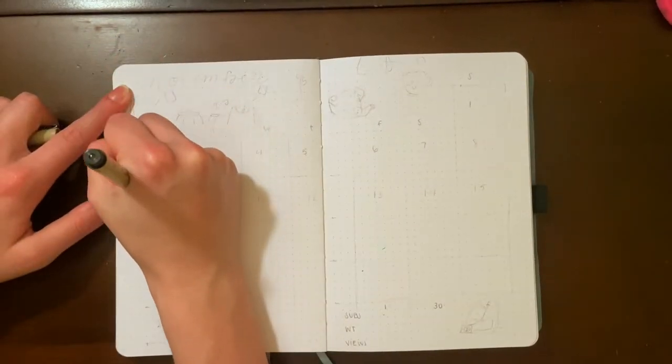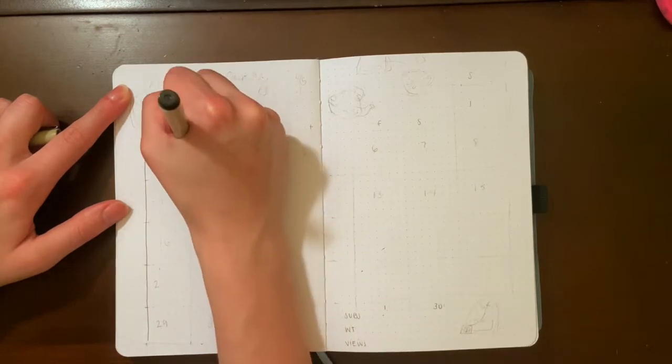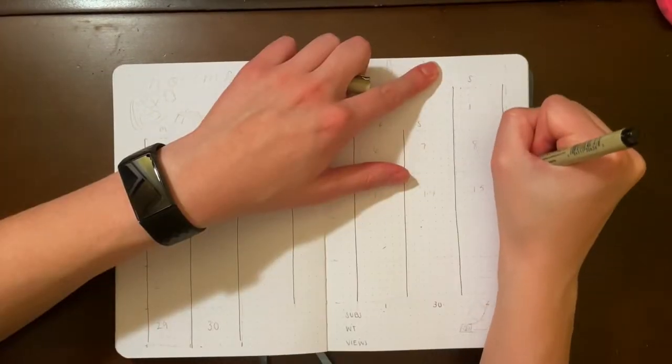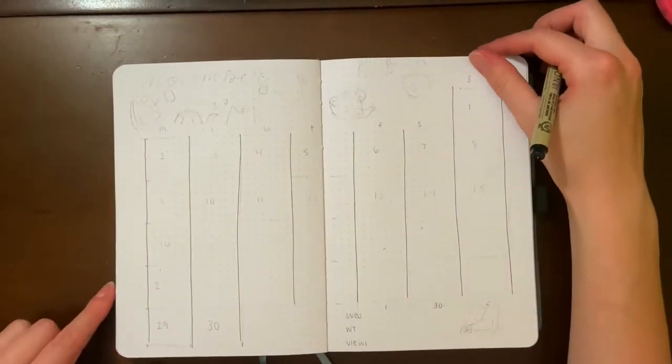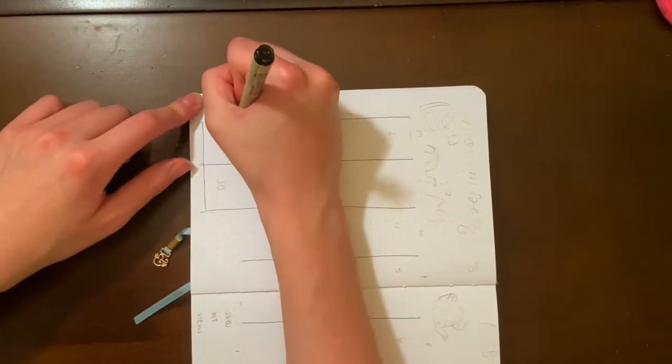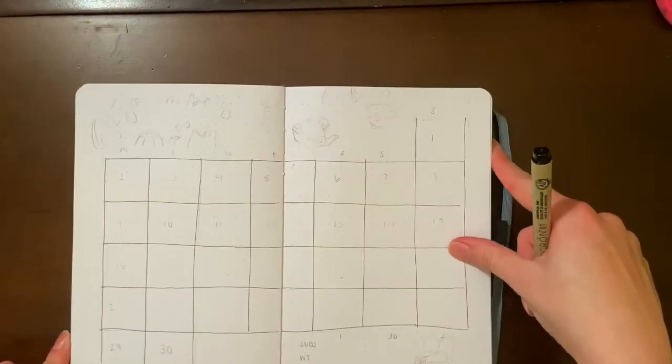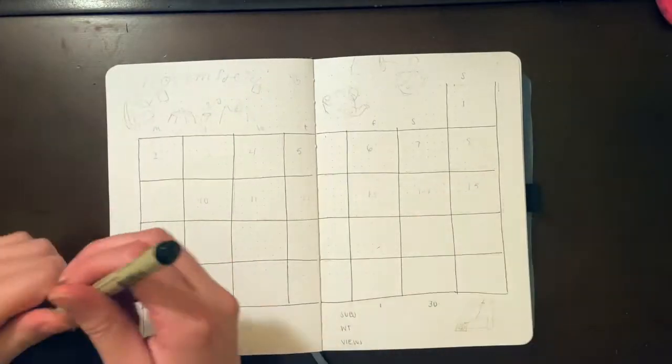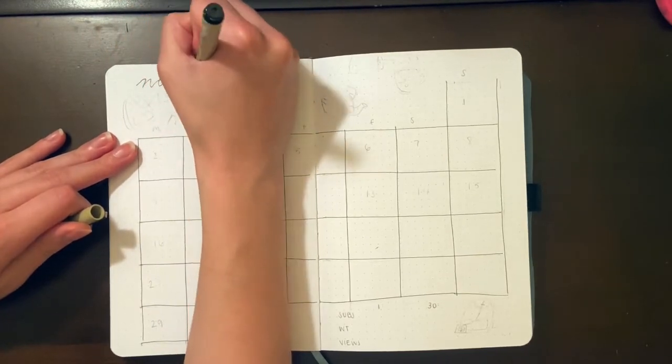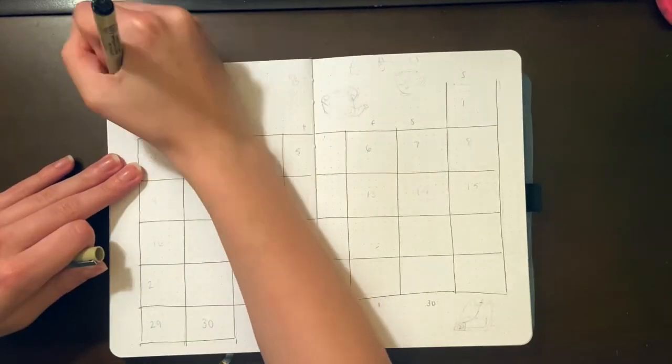Next up is my November calendar spread. And since I like to start my weeks on Mondays, my calendar kind of ended up having a lot more lines than if you had started on Sunday, because the first day of November is a Sunday. So I ended up kind of making some of my box dimensions a little bit different, which I usually do seven by seven, but I think my top and bottom ones are a little bit shorter so I could squeeze them in.